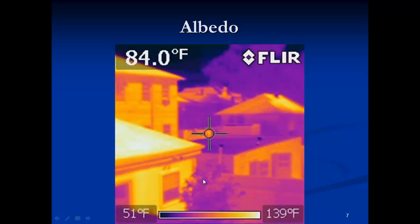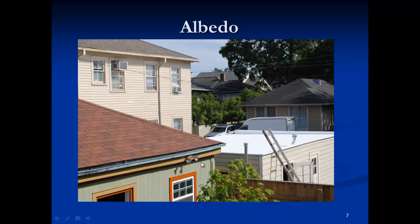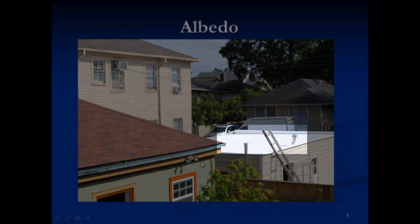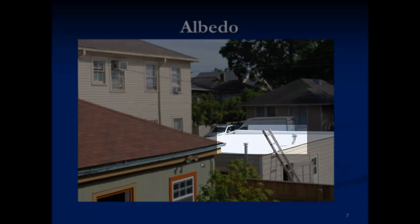That's what albedo is, the amount of reflection a surface has. The white roof has a higher albedo than the darker roof.